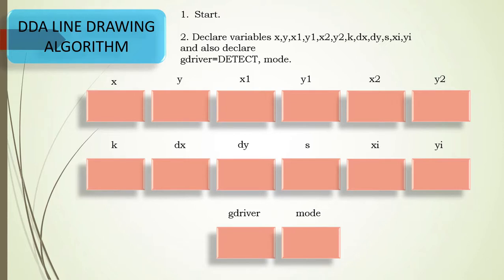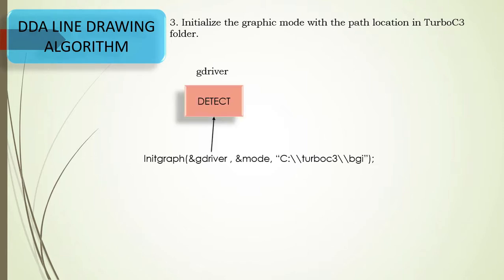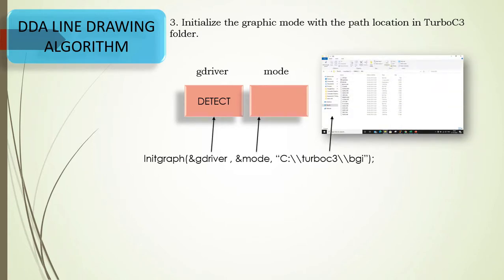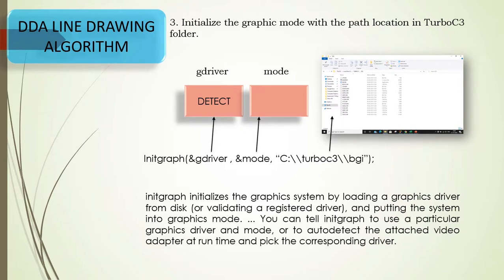The second step is to initialize the graph mode with the path location in Turbo C. This is done with initgraph, which takes three parameters: address of the graphics driver (gd), address of the graphics mode (gm), and the path of the BGI files. initgraph initializes the graphics system by loading the driver from disk and puts the system into graphics mode. You can also set it to auto-detect the attached video adapter at runtime.